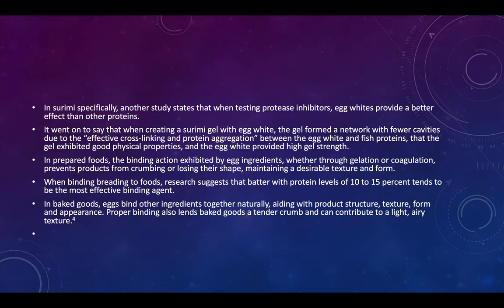In prepared foods, the binding action exhibited by egg ingredients — whether through gelation or coagulation — prevents the product from crumbling or losing its shape while maintaining a desirable texture and form. When binding the breading of food, a batter with protein levels of 10 to 15 percent tends to be the most effective binding agent. In baked goods, eggs bind ingredients together, naturally aiding with product structure, texture, form, and appearance. Proper binding also lends baked goods a tender crumb and can contribute to a light and airy texture.